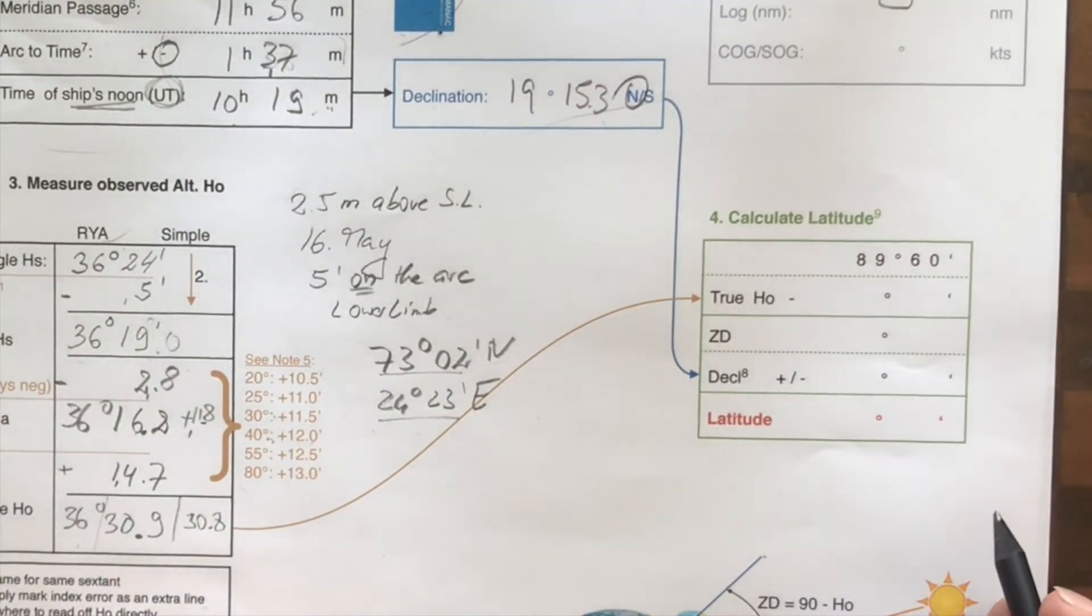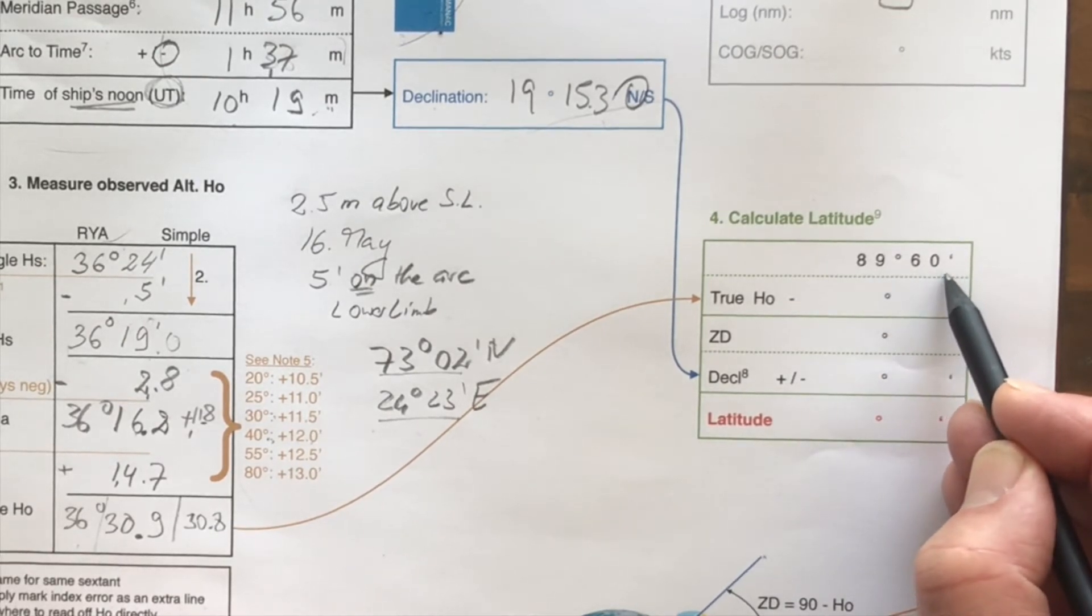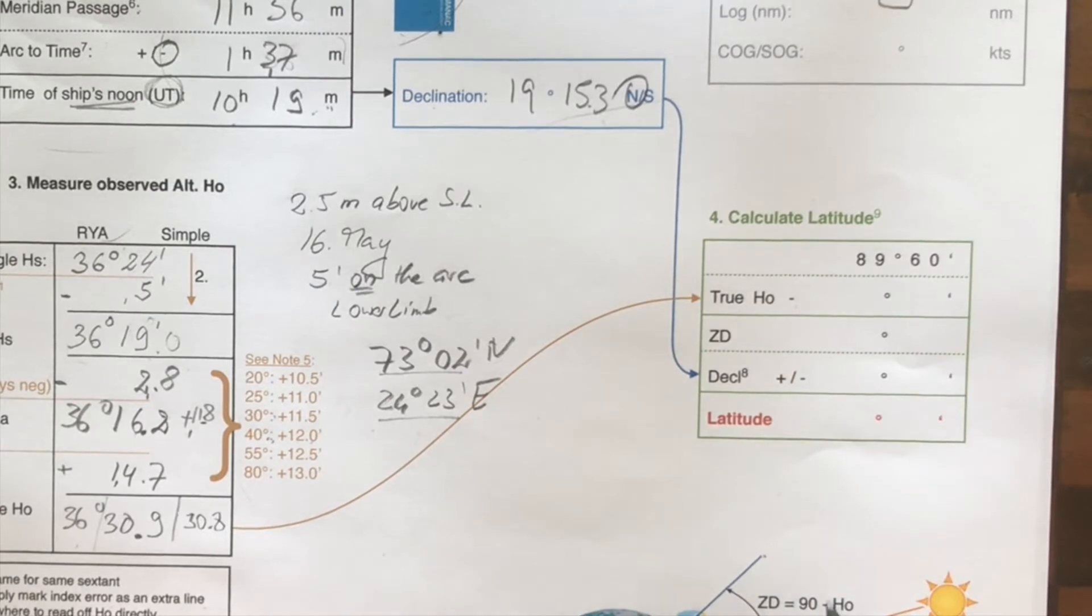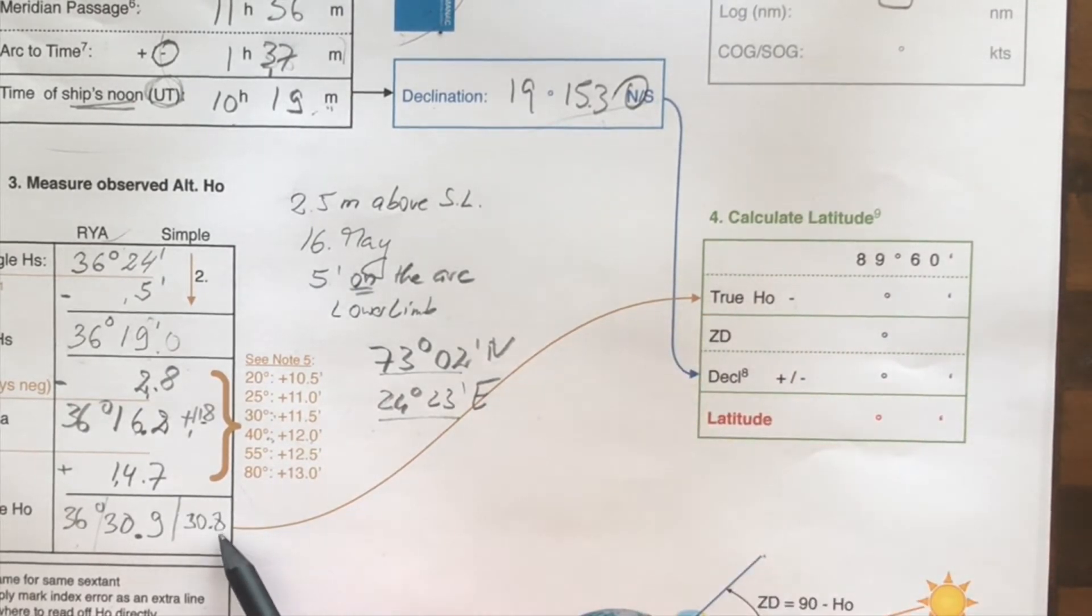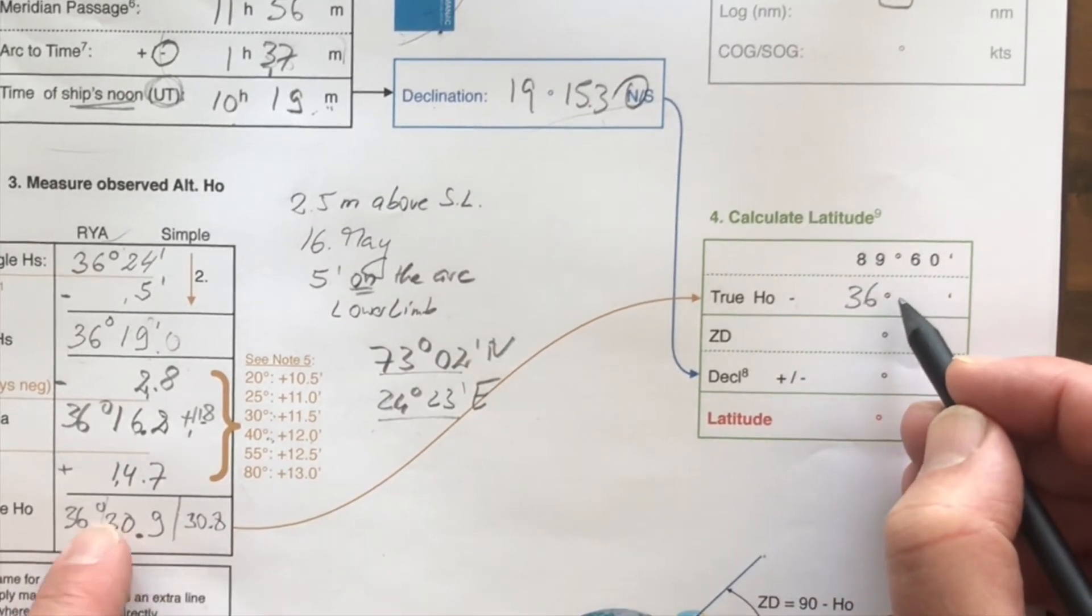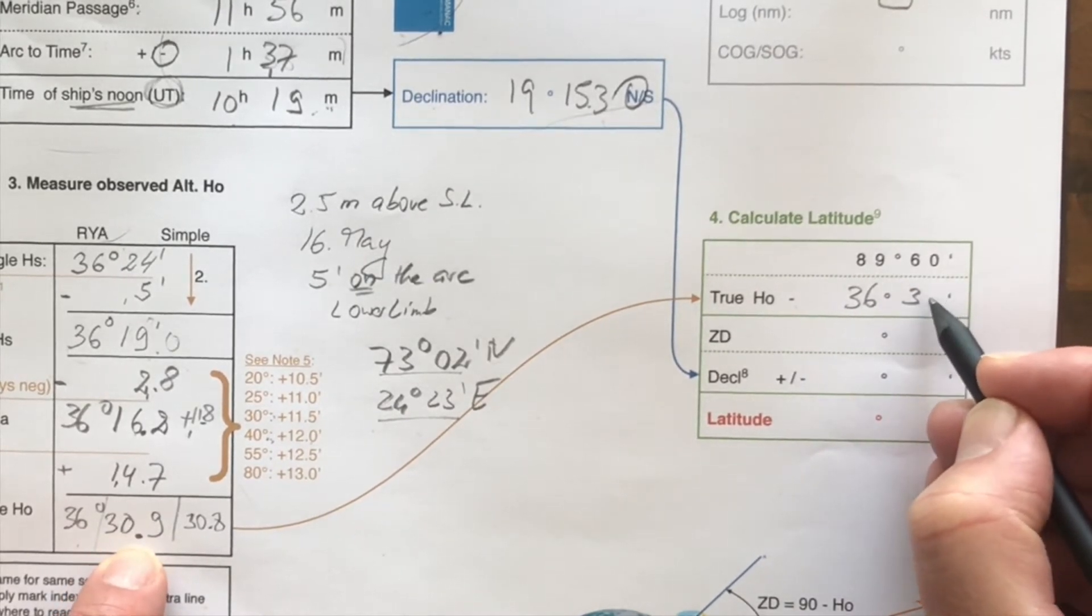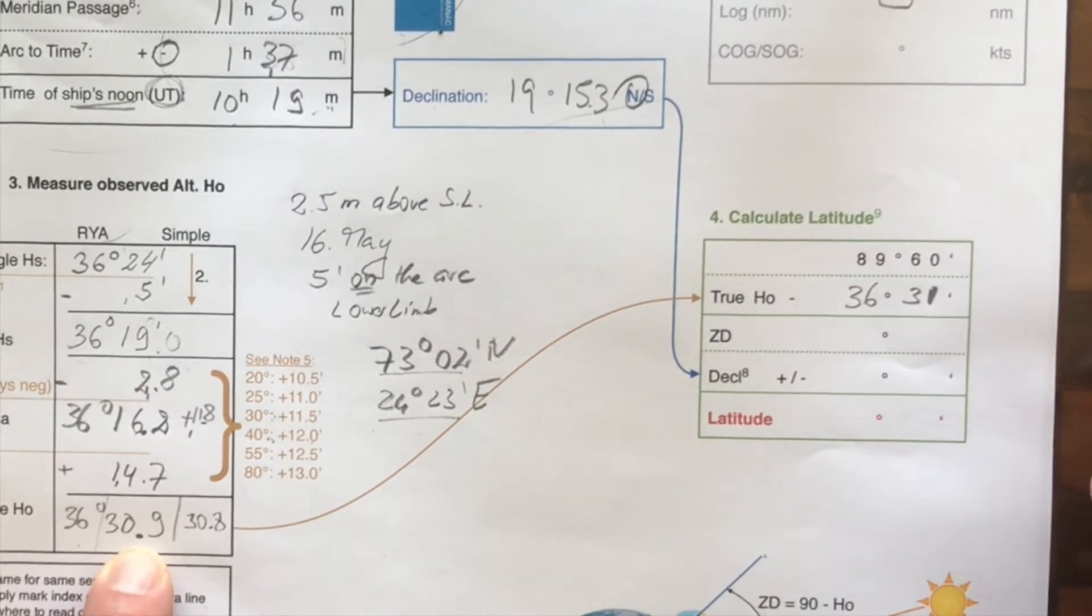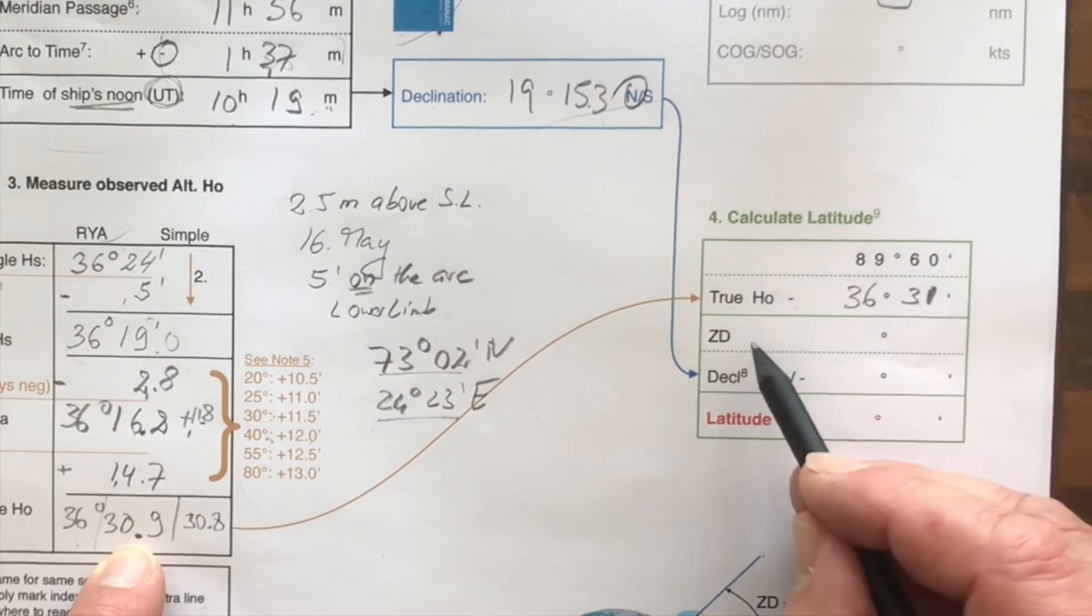So all we have to do now is to get the zenith distance. So if you take 90 minus HO, 90, I have written as 89 degrees and 60 minutes, because that's easier to calculate when you deduct. So you deduct the HO. Here I have made an arrow. So the HO comes from over here. So that is 36 degrees. And which figure should we take? We'll take the precise one here. Or actually, let's call it 31 minutes here. We can't do it more precisely than a minute anyway.